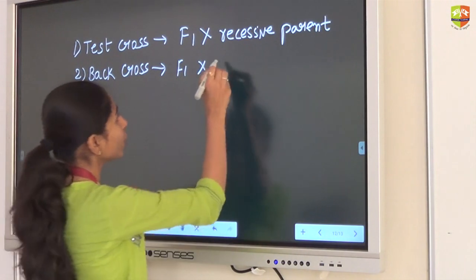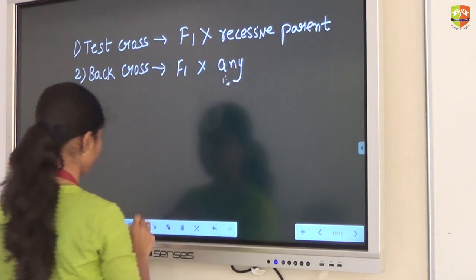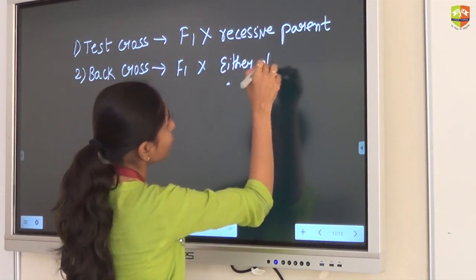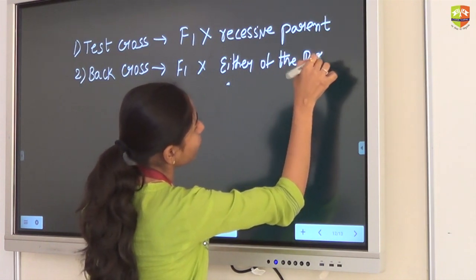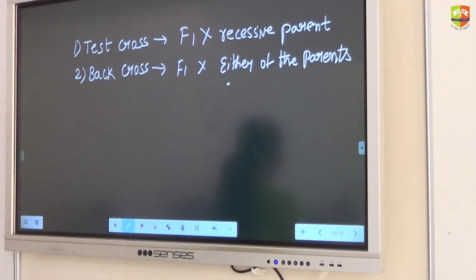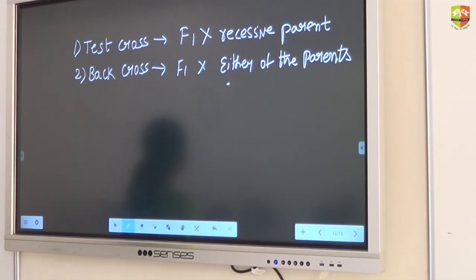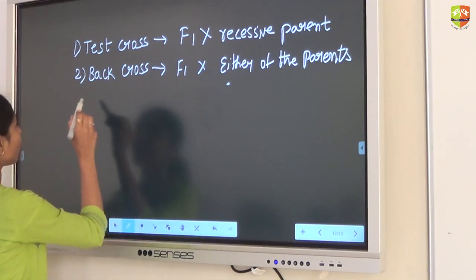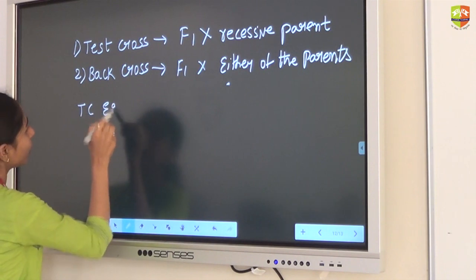The ratios of phenotypic ratio and genotypic ratio of test cross and back cross are also the same in all crosses. Can you tell me one example of a test cross?